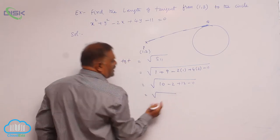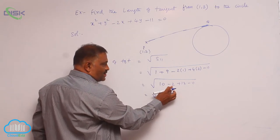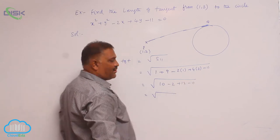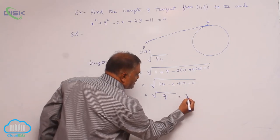This is 8, 8 plus 12, 20, 20 minus 11, 9. So 9 means 3 units.